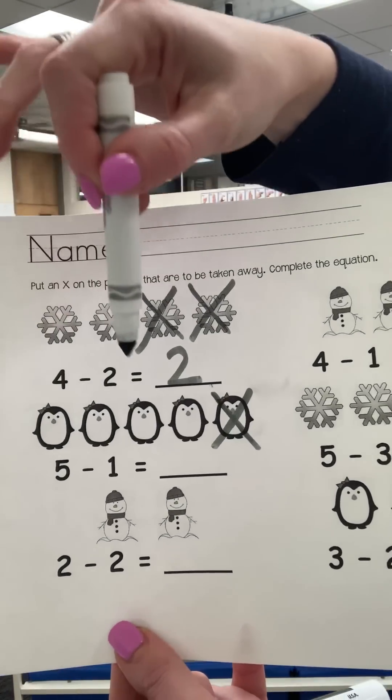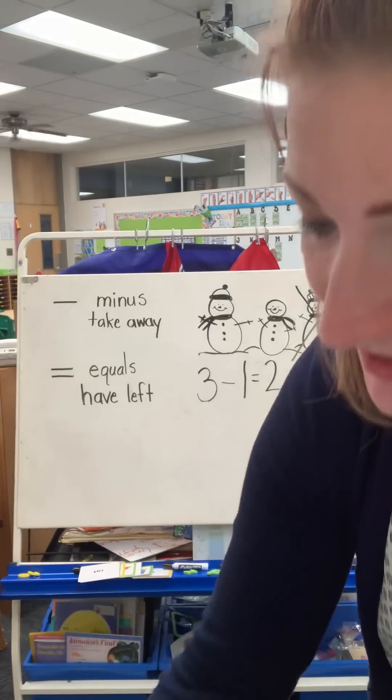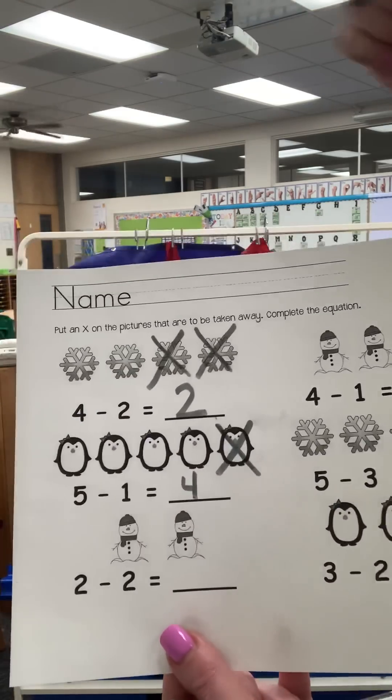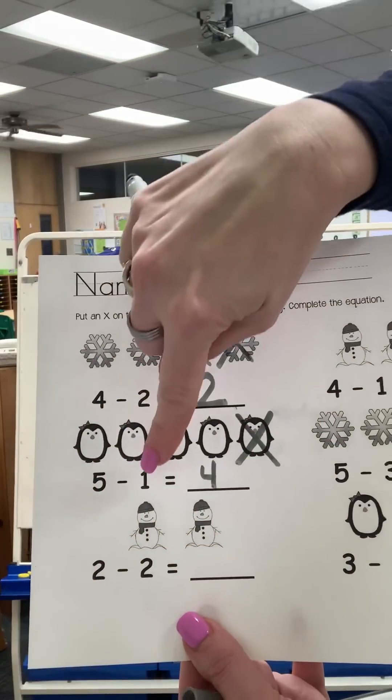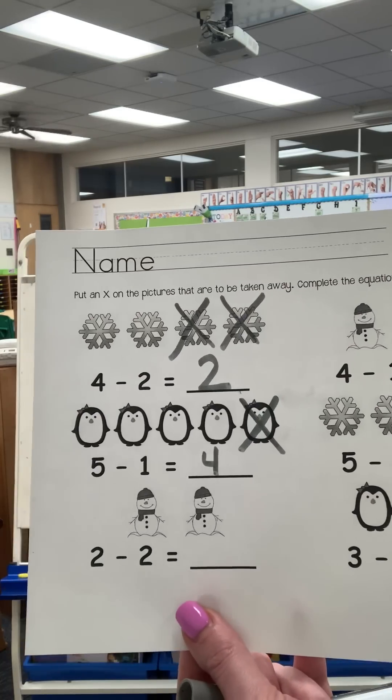Let's count them. One, two, three, four. So my answer is four. I had five. One went away. Now I have four left.